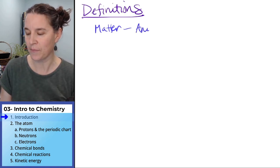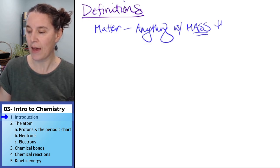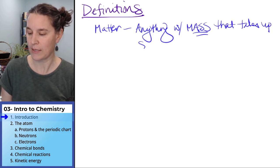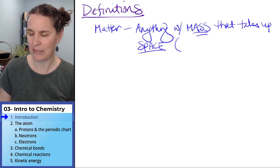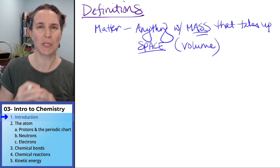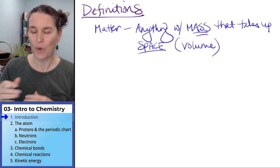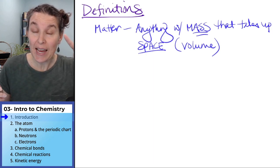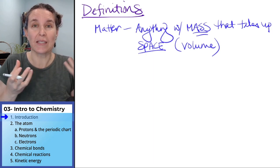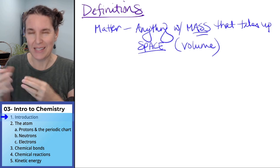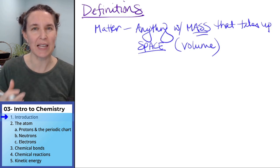And again it's just helpful to have a good clean definition. Matter is anything with mass that takes up space. So anything with mass and volume. Volume is a measure of how much space something takes up. So matter has to have mass. It has to weigh something and it has to take up some space. It has to have volume.